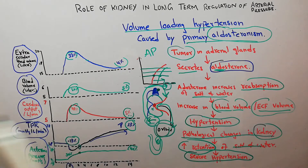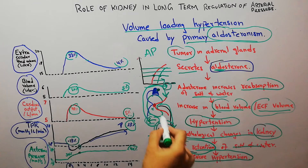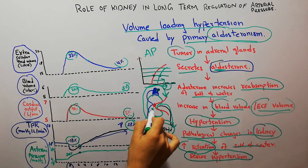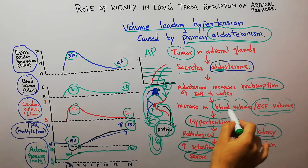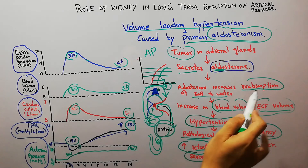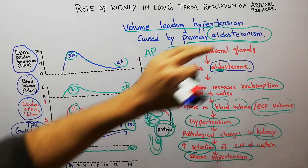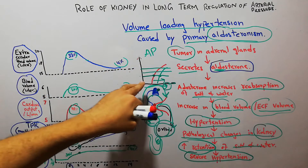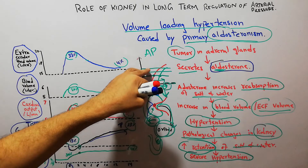Volume loading hypertension may be due to primary aldosteronism, secondary aldosteronism, or other steroids with aldosterone-like functions that promote reabsorption of salt and water, causing accumulation in the body, increasing blood volume and ultimately raising arterial pressure.